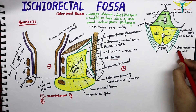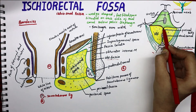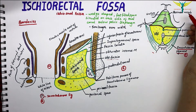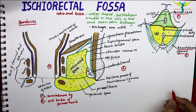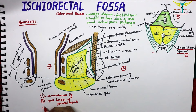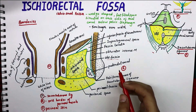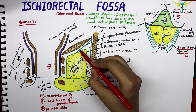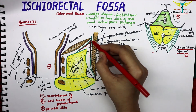The anterior boundary is formed by the posterior border of the perineal membrane, as you can see here. The sacrotuberous ligament forms the posterior boundary. The floor of the ischiorectal fossa is formed by the perineal skin. The roof is formed by the meeting point of the fascia covering the obturator internus muscle and the inferior fascia of the pelvic diaphragm.